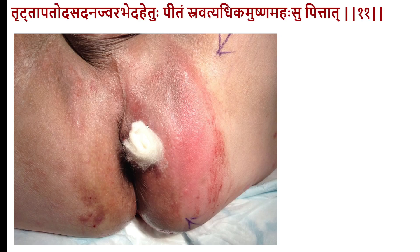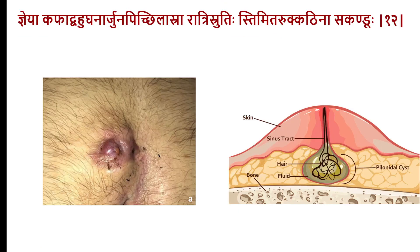In the Pitta-ja variety of Nadi Vrana, there are more systemic symptoms of toxemia — fever, local aching — and pus flows freely and is warm or hot. This is typical of acute inflammatory pathology, frequently seen in anorectal abscesses and fistula-in-ano. When draining an anorectal abscess, there is a deep-seated track that must be followed, after which a pack is placed. This is typically a suppurative infection limited to the ischiorectal fat tissue area.